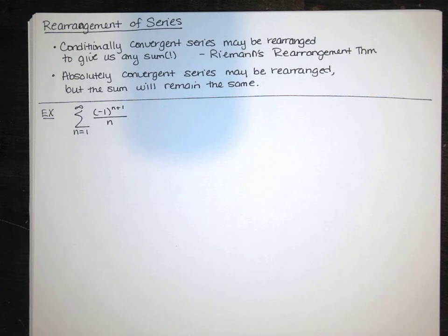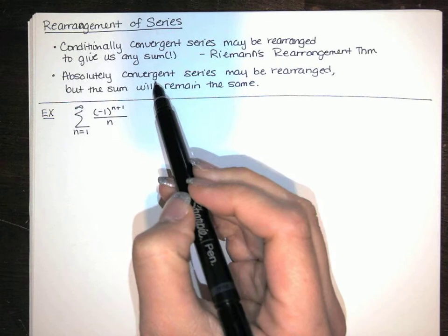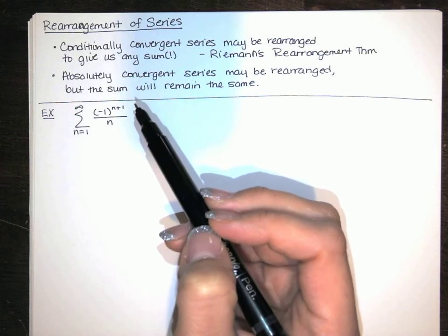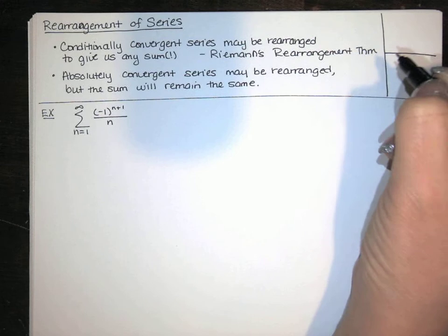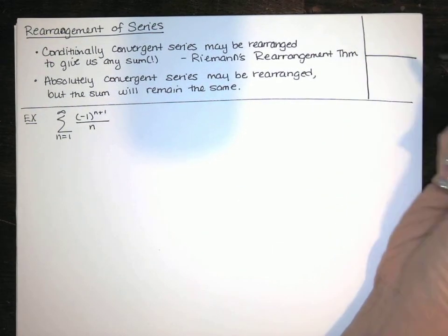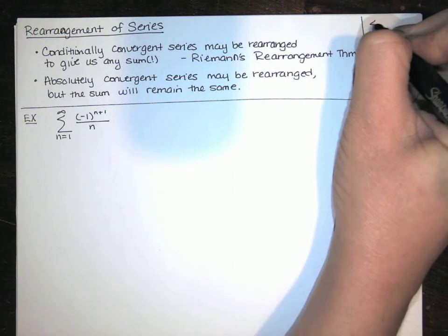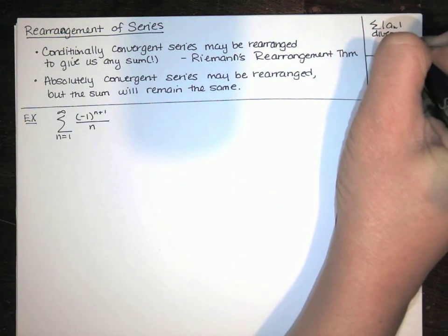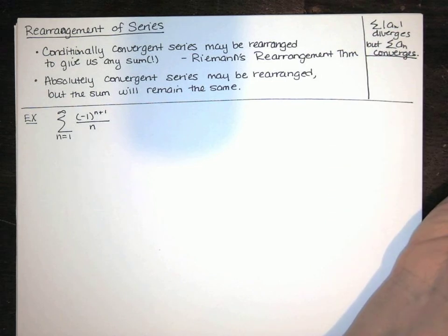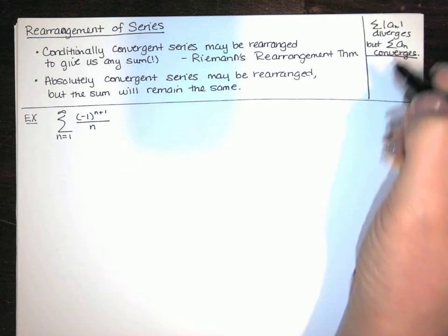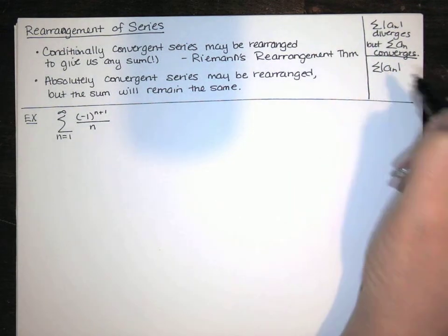I'm not going to prove it, but it turns out that it's true. That only works for conditionally convergent series. Conditionally convergent series are series whose absolute value series does not converge, but the original series does converge. For absolutely convergent series — those are series whose absolute value series converges — both the absolute value series and the original series converge.